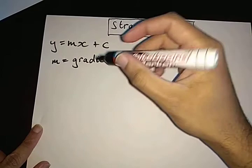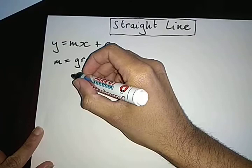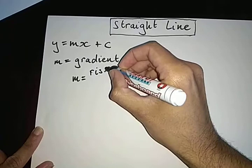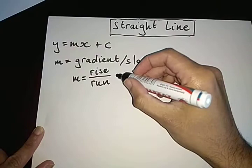Now remember, the gradient can be represented in many ways. And the most common way to actually represent it is to say that the gradient is equal to the rise over run.